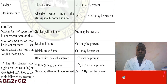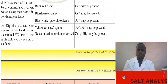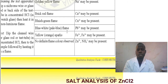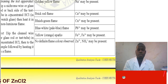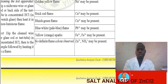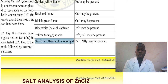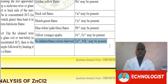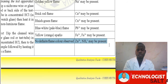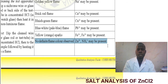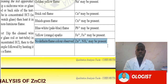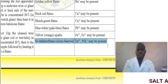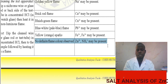The next step is the flame test. We take a sample, dissolve it in concentrated hydrochloric acid, and then perform the flame test. The observation for the flame test is that there will be no definite color observed. The inference is that the zinc ion and the ammonia ion may be present. That is step number two of the preliminary testing.